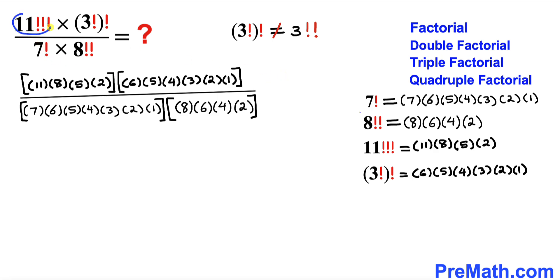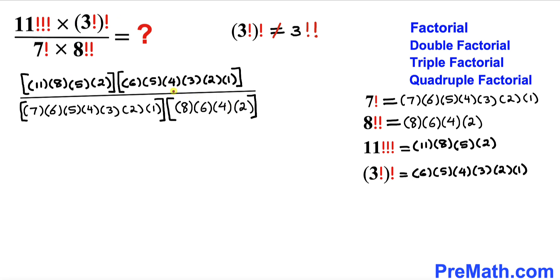In the numerator we have 11 triple factorial replaced by its expansion, and the nested factorial replaced by its expansion. In the denominator, 7 factorial and 8 double factorial are replaced by their expansions. Simplifying the fraction, the shared string cancels, 8 cancels, and 2 cancels, leaving 11 times 5 in the numerator and 7 times 6 times 4 in the denominator.